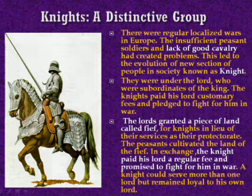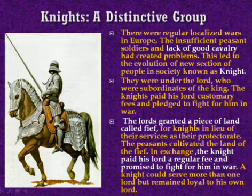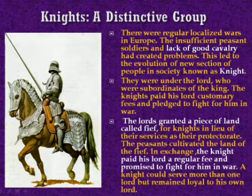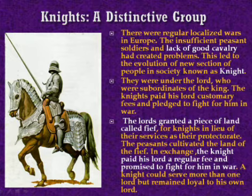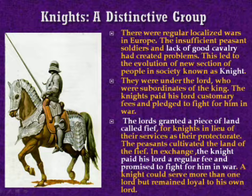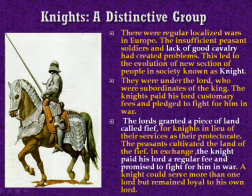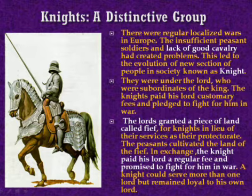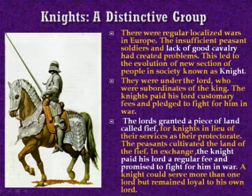The lords granted a piece of land called a fief to knights in lieu of their services as protectors. Just as nobles received land from kings, knights received land from nobles, and this land was known as a fief. The fief of a knight could be hereditary and ranged in size from 1,000 to 2,000 acres or even more. A knight's fief consisted of a house for him and his family, church, settlements of dependent people, water mills, and various gardens. The peasants cultivated the land of the fief, and in exchange the knight paid his lord regular fees and promised to fight for him in war.